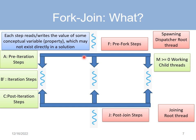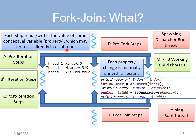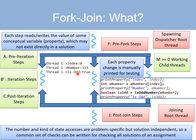Each step accesses the value of some conceptual variable or property, and this variable may not exist directly in the solution. For our example problem, in each iteration a child thread prints the index of the input element it's processing, the actual random number at that element, and determines whether the number is odd or not, and prints the result. Different problems will have different values for all these steps, but given a problem, all solutions are supposed to follow the same set of steps. Given that assumption, we can build a common set of checks to see whether solutions are correct or erroneous.